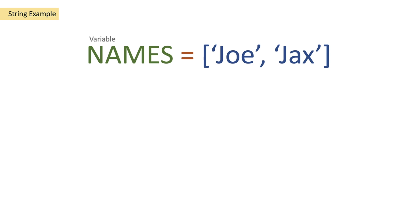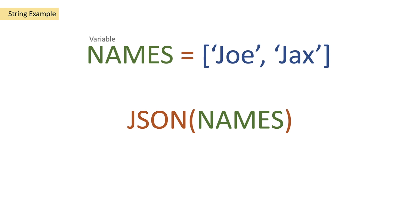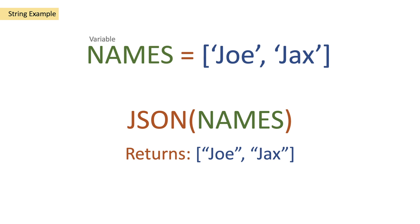As you can see here, we have the square brackets opening, we've got Joe in the string, then a comma, then Jax in the string, and we close the square brackets. This is going to be passed into the JSON function — so we're passing in a string variable of names into the JSON function, where we've actually created an array in our string. It's going to convert it to a JSON array, so we actually have Joe and Jax in JSON.